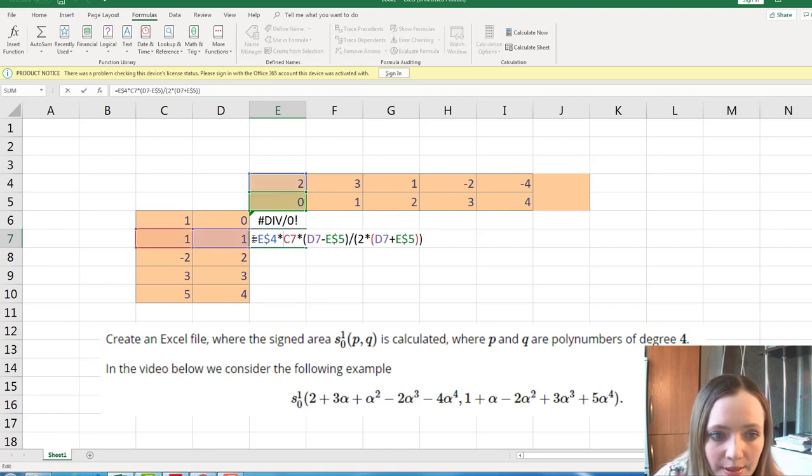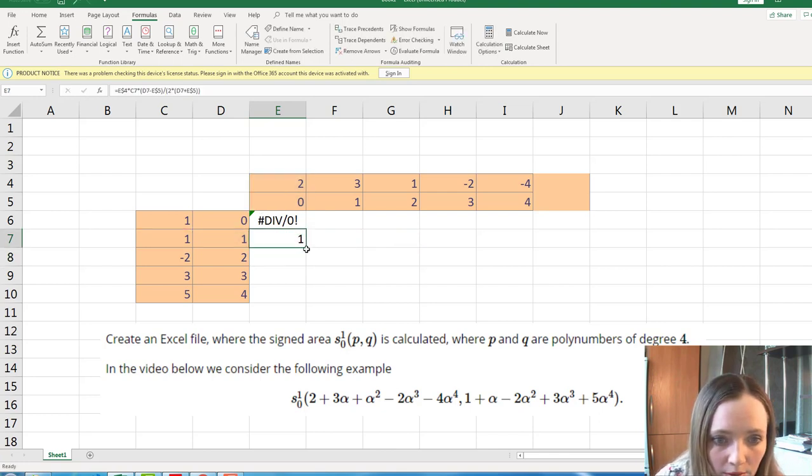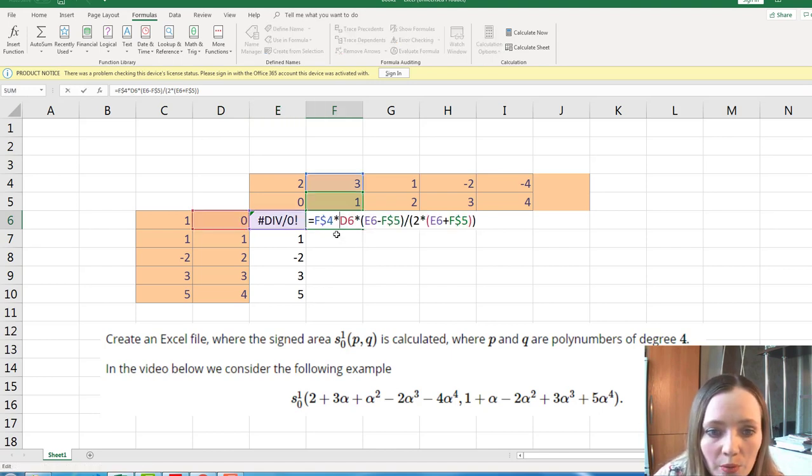E4 times c7. E4 times c7. D7 minus e5. D7 minus e5 over 2 times d7 plus e5. So everything is correct now. We can repeat the same formula everywhere. Now we need to go to the right. And again here.